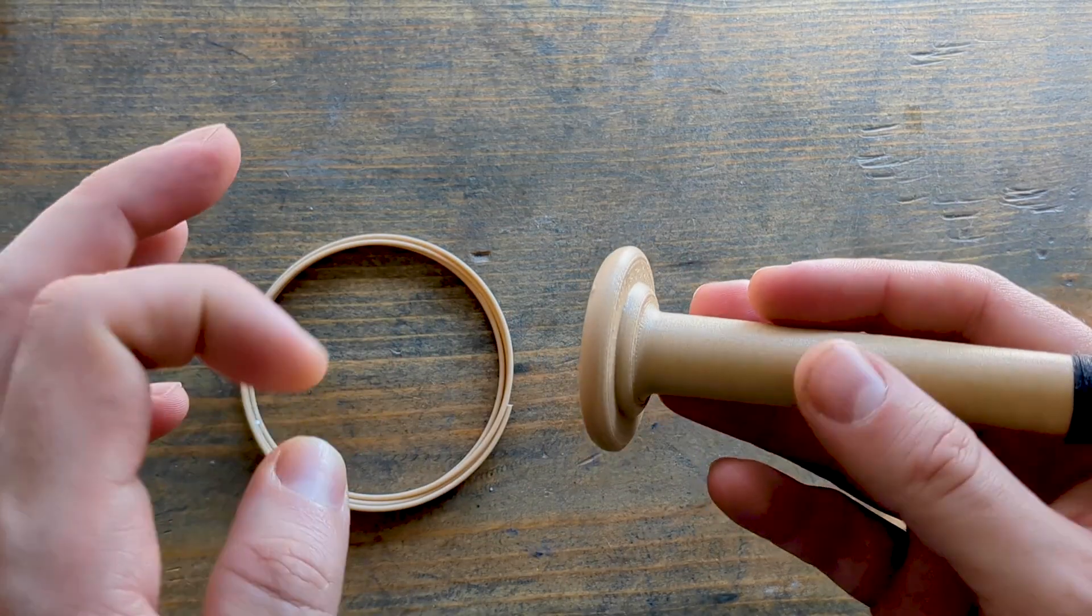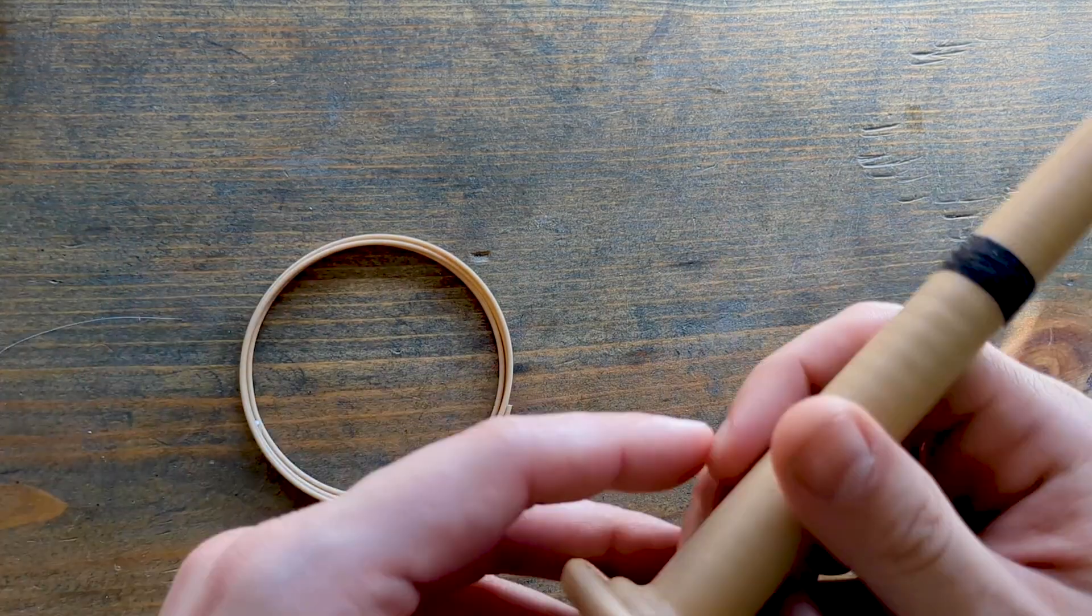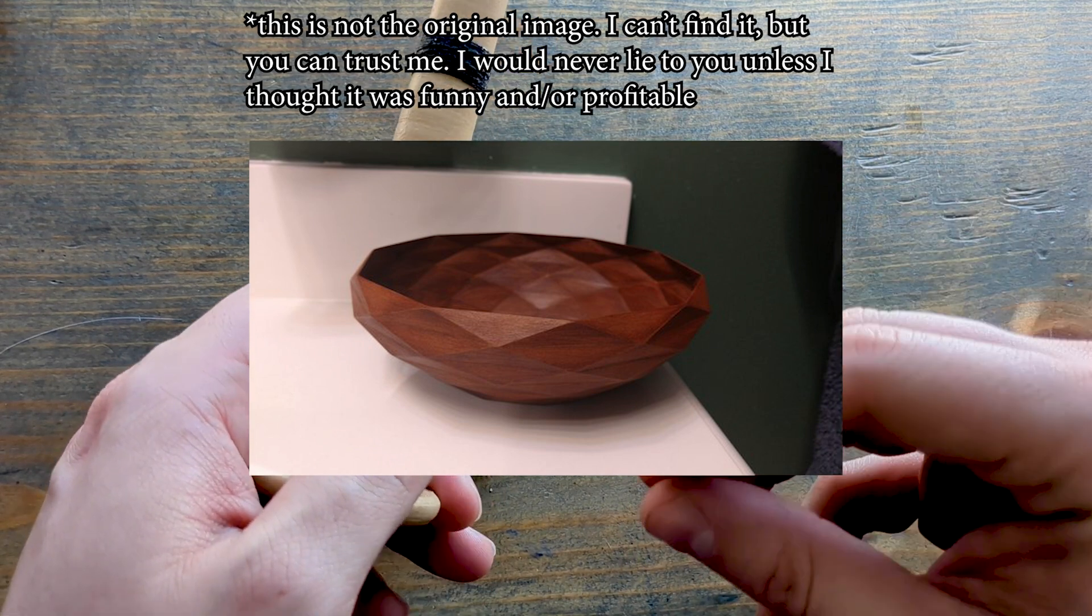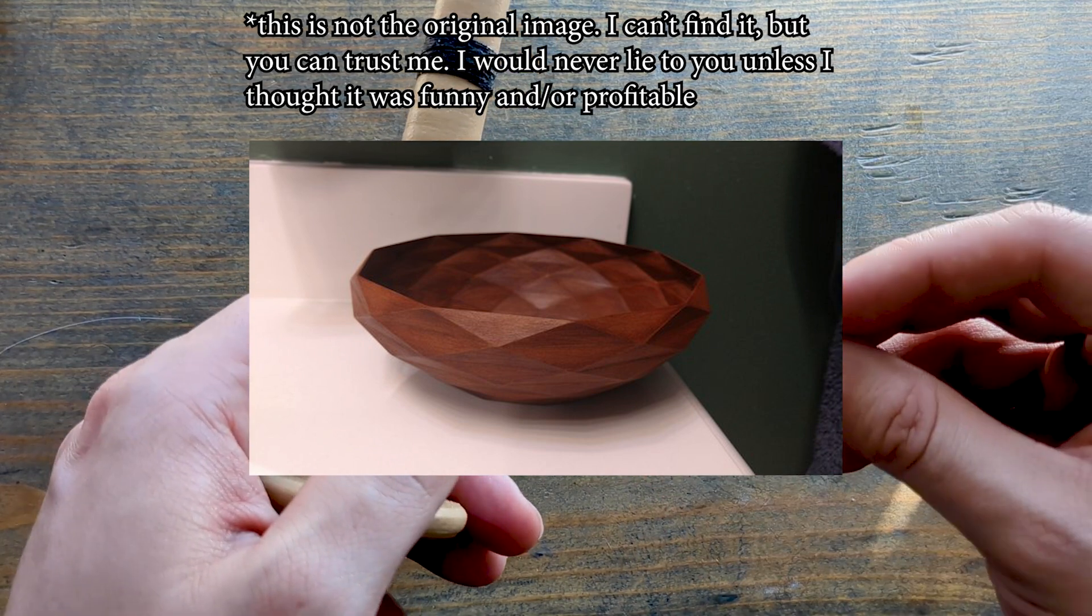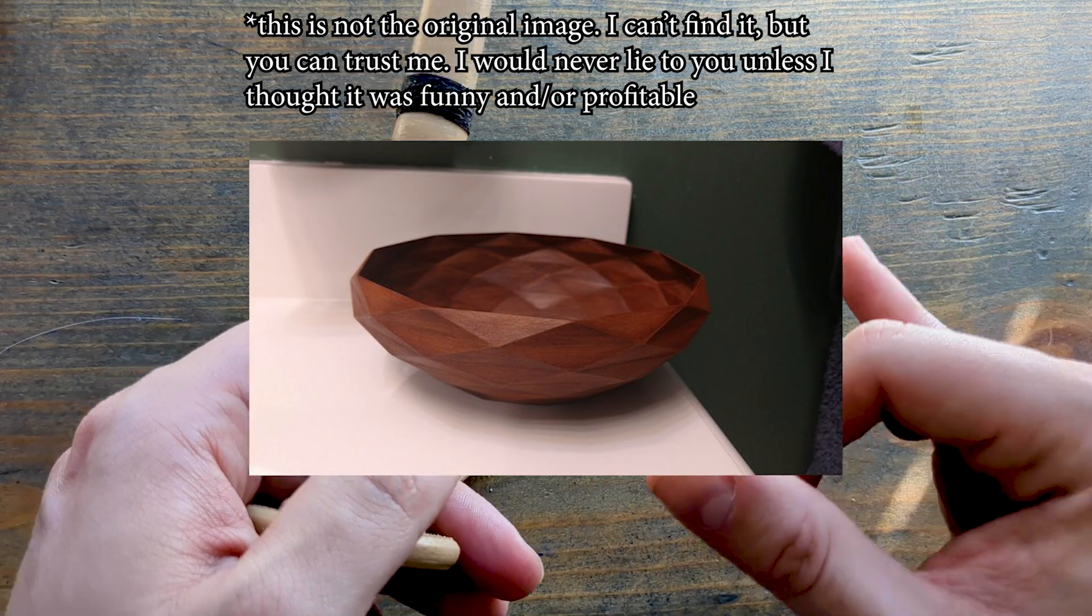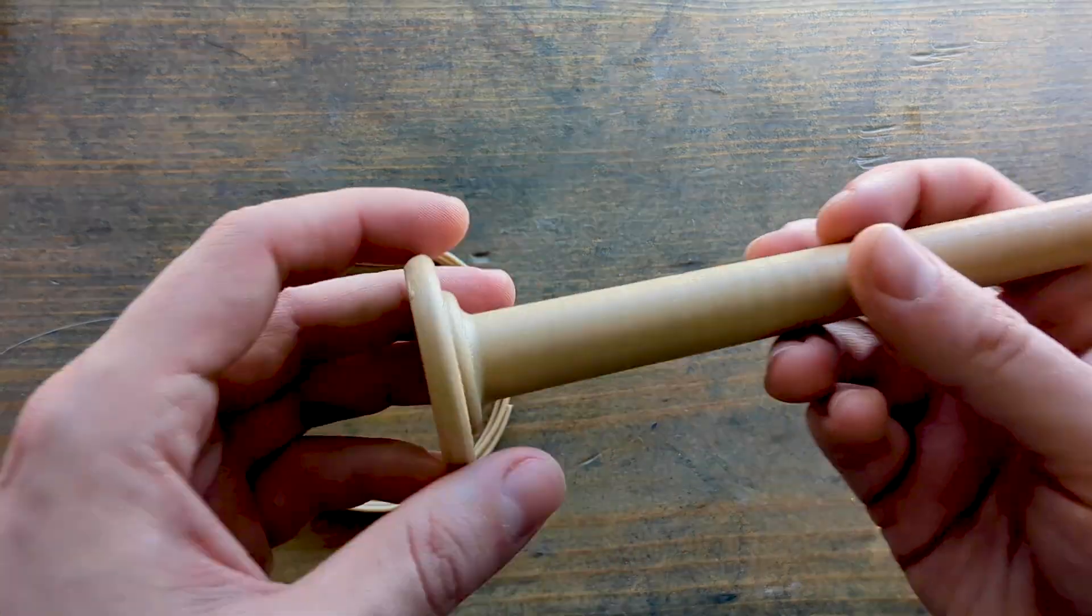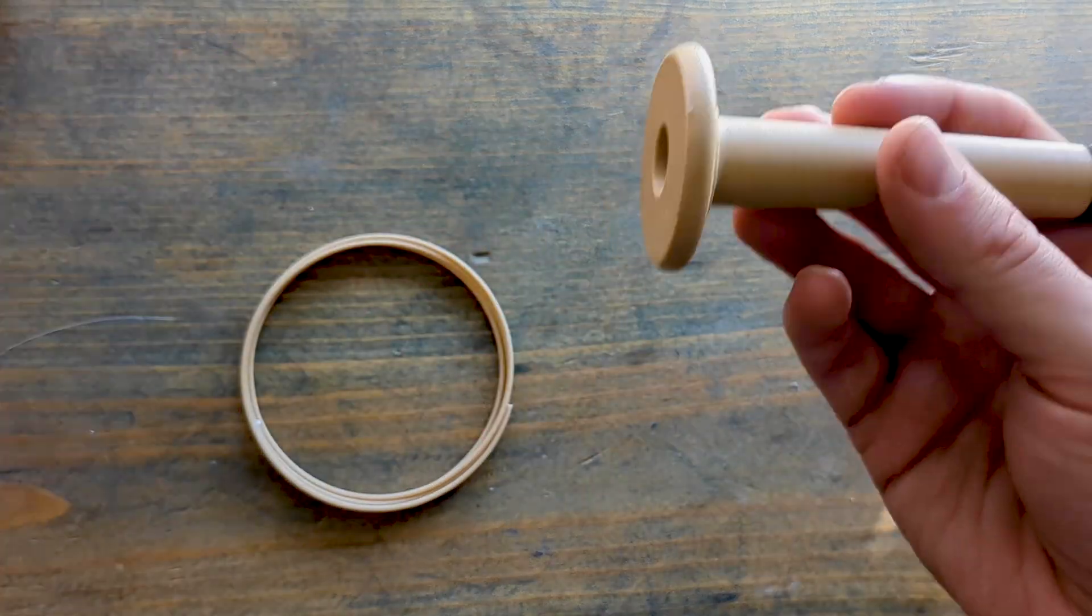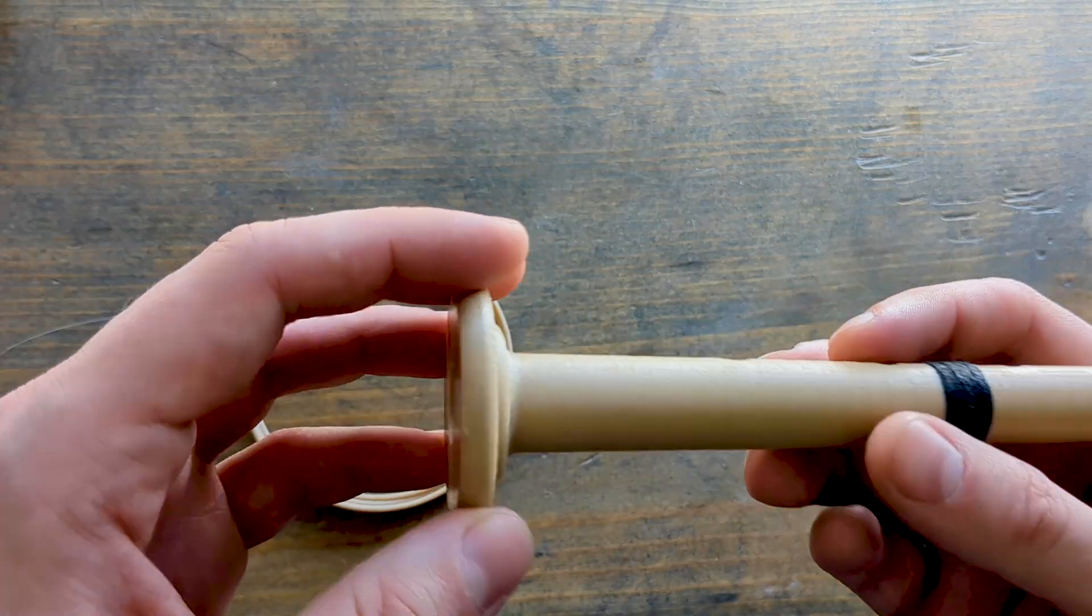But a few years ago, I was on the internet of all places, and I came across this image where someone was actually able to recreate kind of a wood grain appearance by adjusting the temperature of their printing nozzle as they were printing their wood-fill, in this case, a bowl. And I thought that would be neat to try.